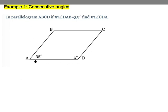And they say that in parallelogram ABCD, if the measurement of angle DAB is 35, what is the measurement of angle CDA? So we're thinking about what types of angles these are and what the relationship is. Now these are consecutive angles because they're right next to each other.